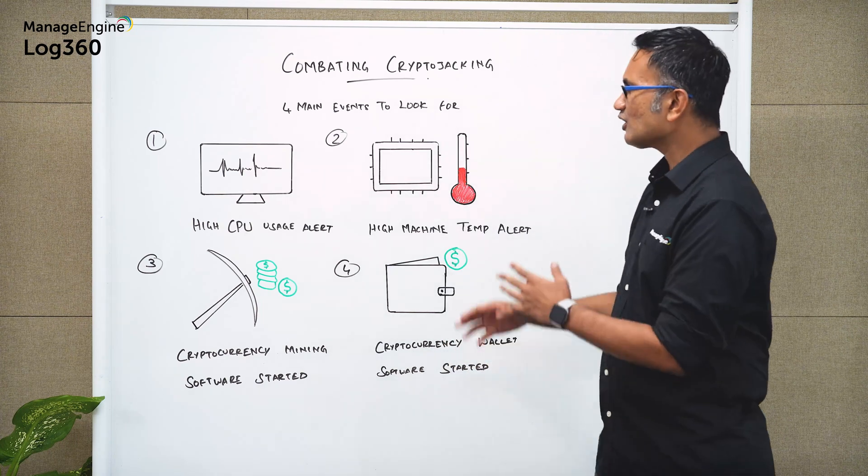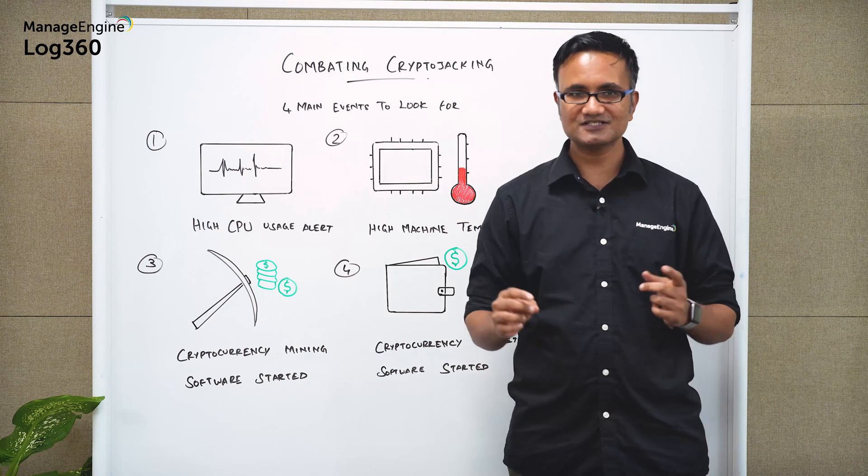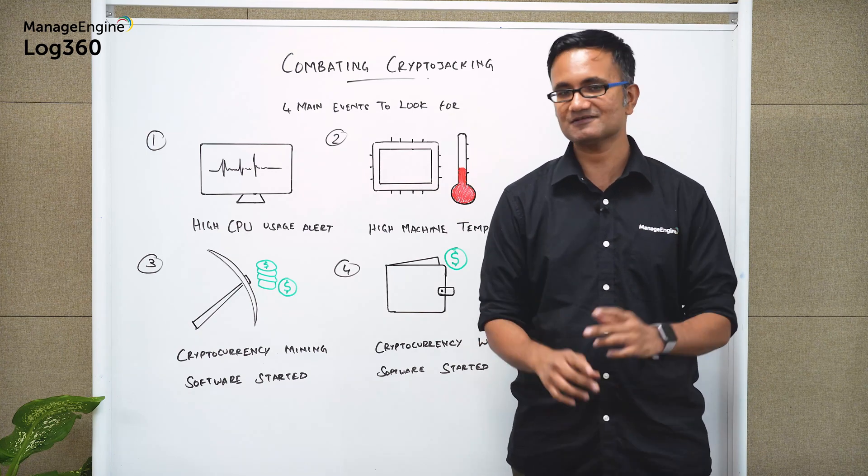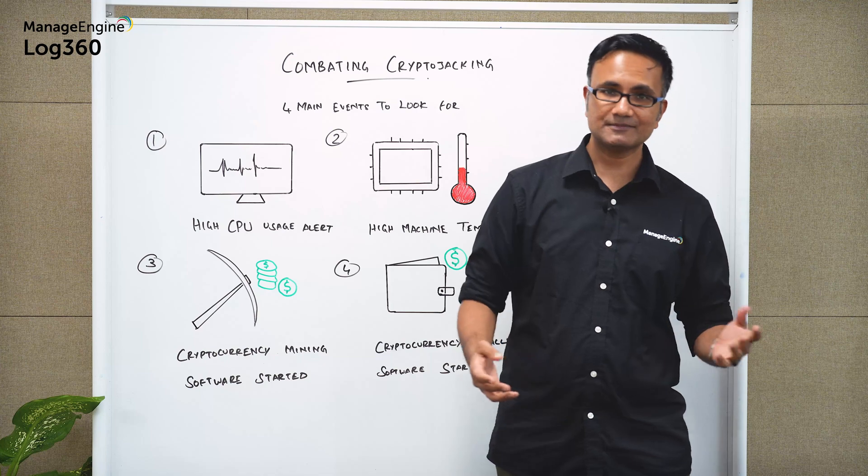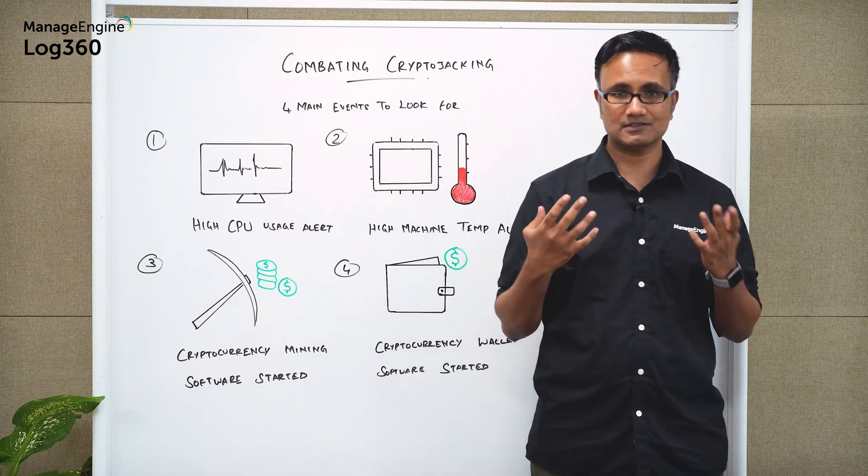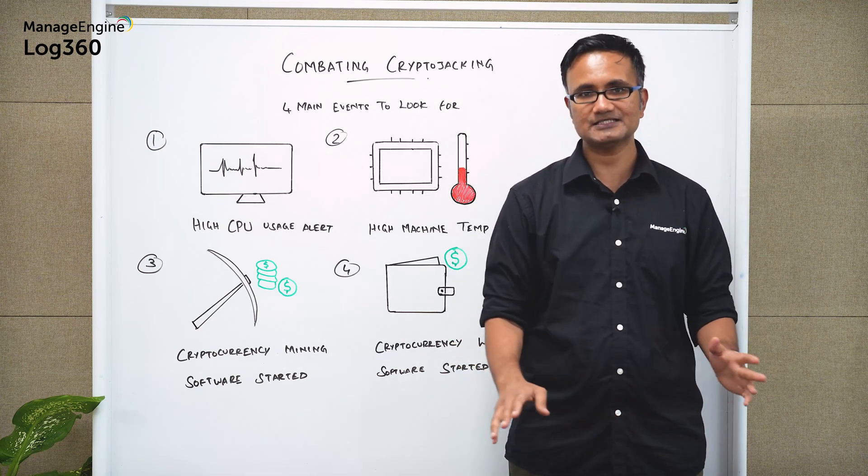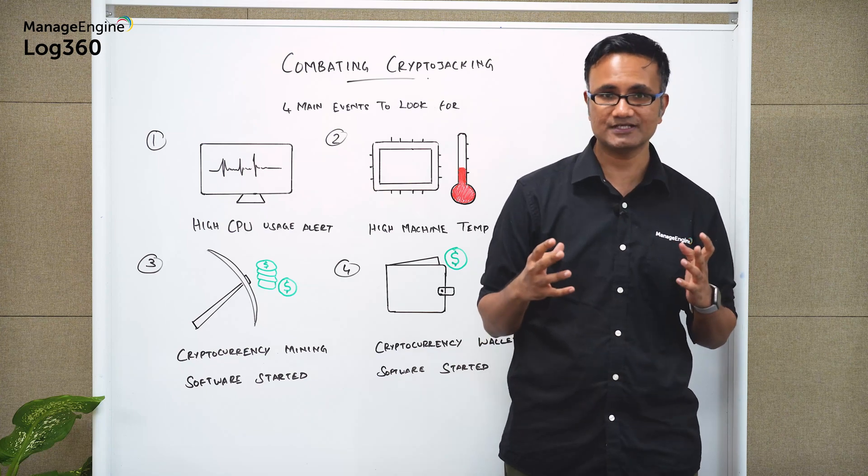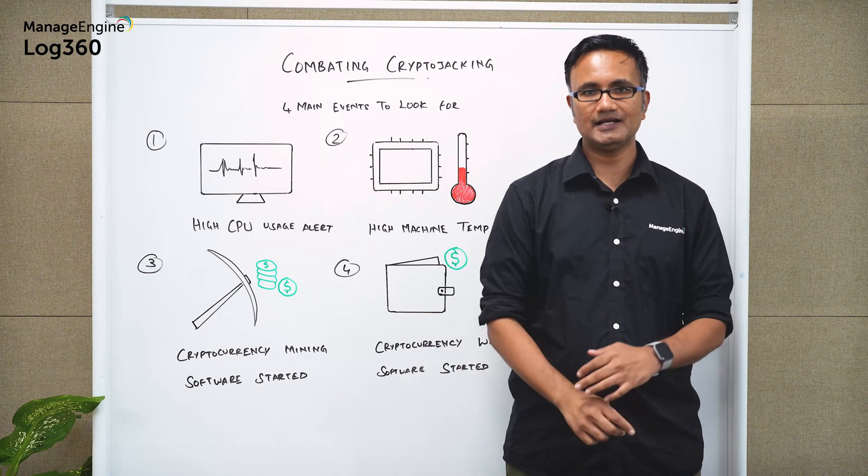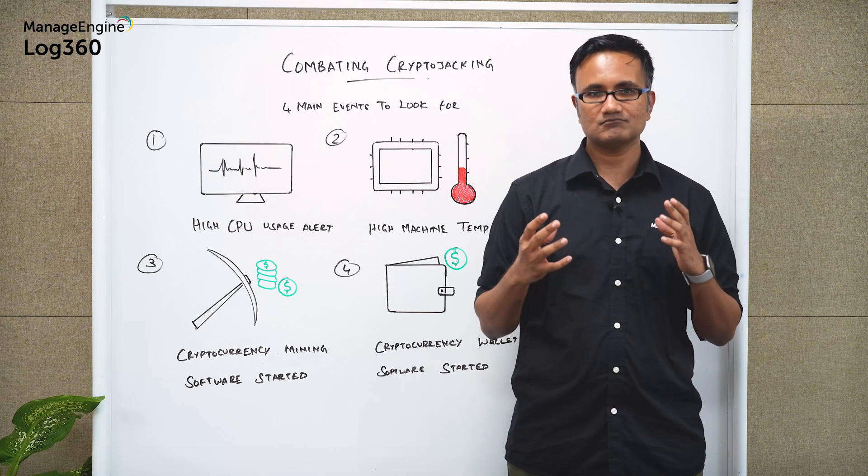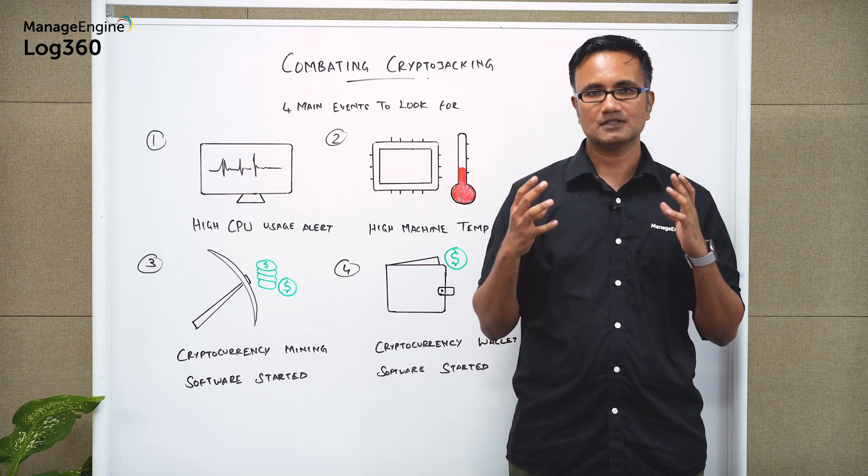Now when we talk about crypto jacking we first have to talk about what cryptocurrency really is. Well cryptocurrency is a type of digital currency that is completely decentralized so there is no centralized authority such as a bank and it is actually dependent on cryptography.